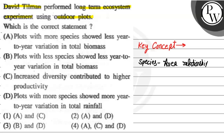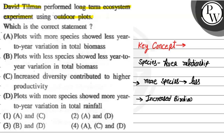David Tillman saw that when there were more species, there was less year-to-year variation in total biomass. And when they increased biodiversity, productivity also increased — biodiversity is proportional to productivity.